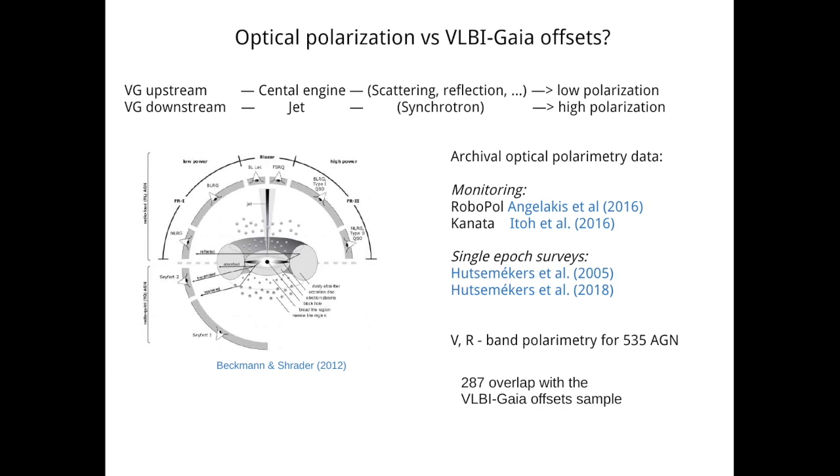So in order to check this hypothesis, we collected publicly available optical polarimetric data. We collected data from these two monitoring programs that focus mostly on blazars, Robopol and Kanata, and also we added data from papers with single epoch observations and some historic data. In total we managed to collect data for 535 active galactic nuclei in two bands, V and R bands. We don't distinguish these two bands because they are located quite close and typically the polarization parameters are equal within uncertainties of measurements in these two bands.